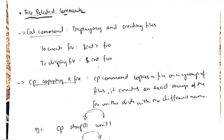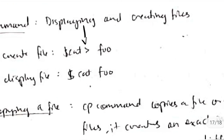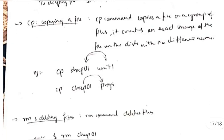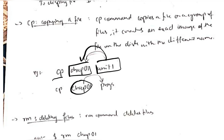File related commands: the 'cat' command has two functions — to create a file and to display a file. To create a file use 'cat >' and the file name; whatever input you enter will be stored in that file. To display the file just write 'cat' and the file name, and it will display the file contents. 'cp' is used to copy a file — write 'cp filename1 filename2' and the second file's content will be copied to the first. To copy a file to another directory, write the source and destination directory path.